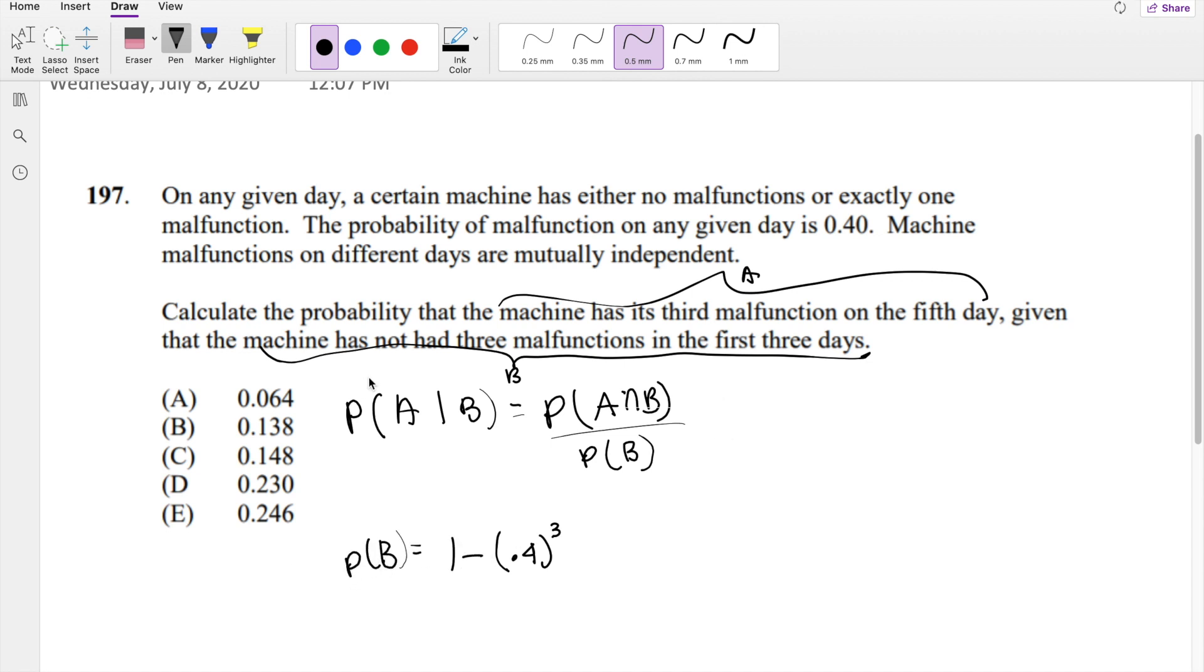And what's the numerator? What is the probability the machine had its third malfunction on the fifth day, and it has not had three malfunctions in the first three days? But the thing is, basically, that's kind of redundant,